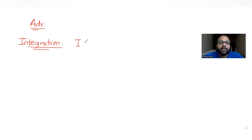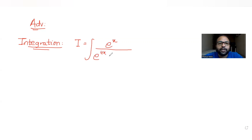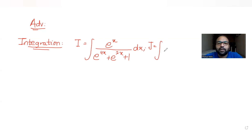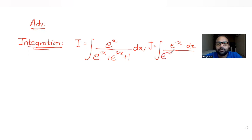we have been told that let I is an integral. The expression given to us is e raised to x, denominator is e raised to 4x plus e raised to 2x plus 1, dx. And we have also been given one more integral J, that is integral of e raised to minus x dx, denominator given to us as e raised to minus 4x plus e raised to minus 2x plus 1.